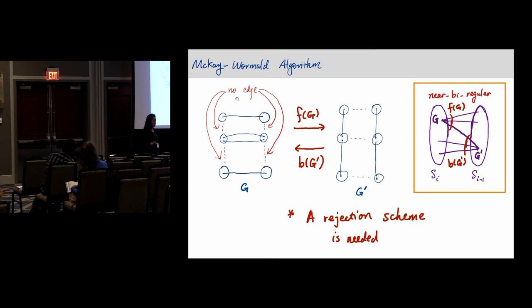If you're lucky, which won't happen, that the graph is biregular, then of course very simply you can show that it's uniform. Once you start uniform here, you get uniform here. Of course it's not uniform, but if you can compute those f and b functions, then you can correct it. You can correct the distortion by performing this kind of Markov chain.